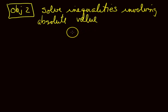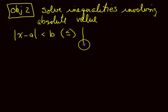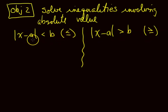There are really two general situations. The absolute value of X minus A is less than B — or less than or equal to — and the absolute value of X minus A is greater than B — or greater than or equal to. The way you solve these is pretty much the same: you split it up.